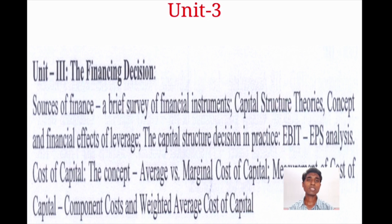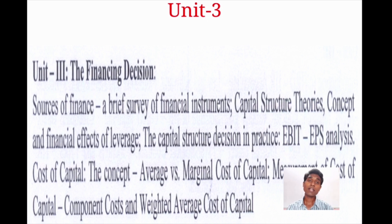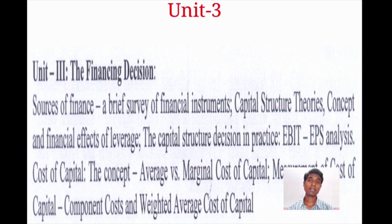Unit Number Three is named the Financing Decision, under which you will be learning the sources of finance. When you have made your mind to invest and have chosen a project, you need to know what sources you can borrow finance from and at what cost. Under Unit Number Three, you will be learning the sources of finance, how to calculate the cost of each source, and the impact of cost of capital on profit.